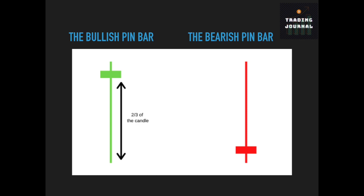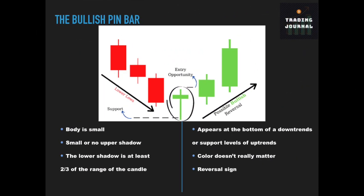The first pattern we will see is pin bar candles. There are two pin bar candles: the bullish one and the bearish one. They are called pin bars because they look like a pin. The bullish pin bar is a candle that appears at the bottom of downtrends or at the support levels of uptrends. Color does not really matter — it can be red or green. It has a small body that looks like a pin. The lower shadow is relatively long and is at least two-thirds of the range of the candle. There is little or no upper shadow. It tells us that bulls are getting control of the movement.